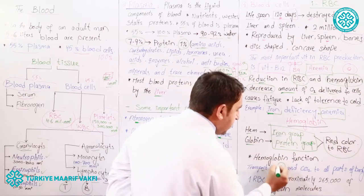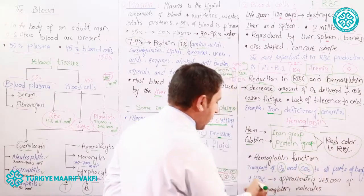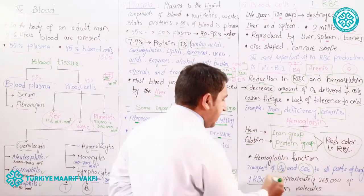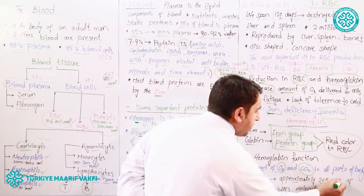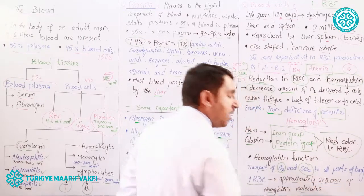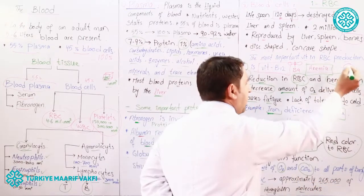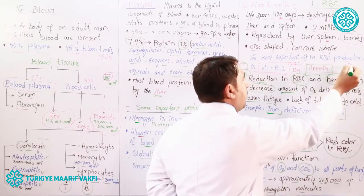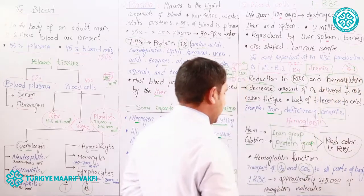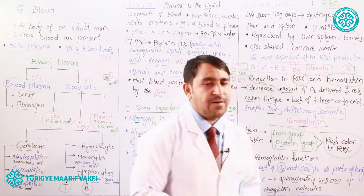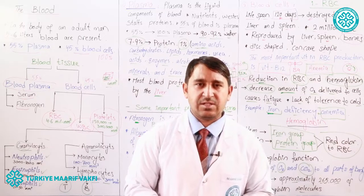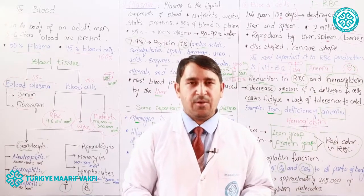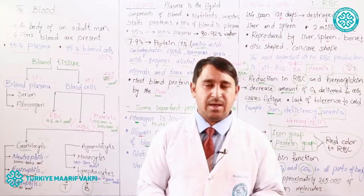If we examine one RBC, we can find approximately 265,000 hemoglobin molecules in it. This is the structure and function of hemoglobin. In the next lesson, we will study RBC, WBC, and platelets in more detail. If you have any questions, you can ask in the group. Have a good time.